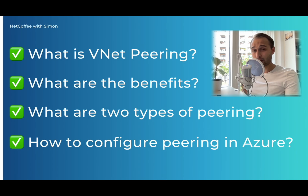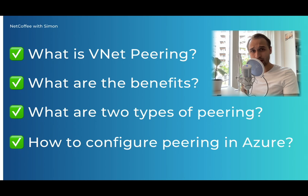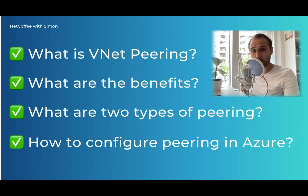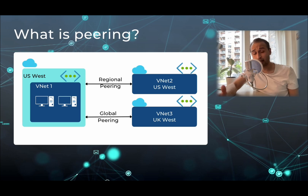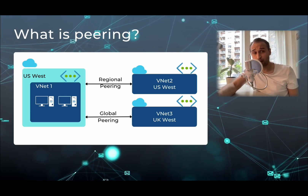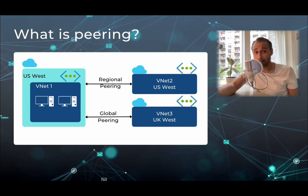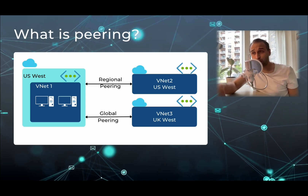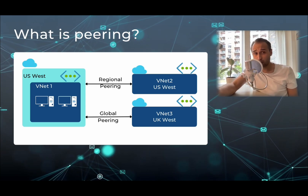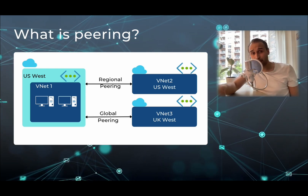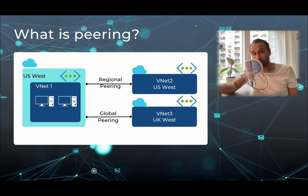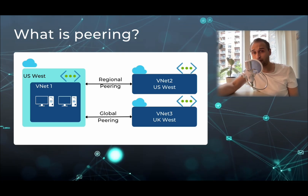We're going to look at what is peering, what are its benefits, types. And at the end, we're going to run a quick demo using Azure virtual networks to demonstrate how to use it and how to configure it. Peering simply is a service in Azure that helps us to connect different virtual networks, regardless if they are in the same or different regions. We don't need to go for any expensive solutions such as VPN point-to-site, site-to-site, or ExpressRoute.